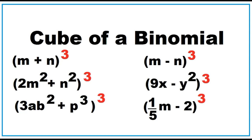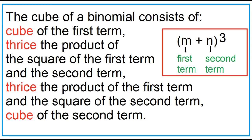Cube of a binomial. The cube of a binomial consists of the cube of the first term, thrice the product of the square of the first term and the second term, thrice the product of the first term and the square of the second term, and the cube of the second term.